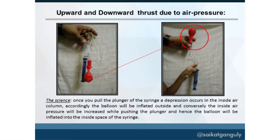The first experiment demonstrates upward and downward thrust due to air pressure. Only two syringes, one connecting tube, and a small balloon are required. Whenever you push the piston, the inside air pressure increases, and whenever you pull the piston, the inside air pressure decreases.